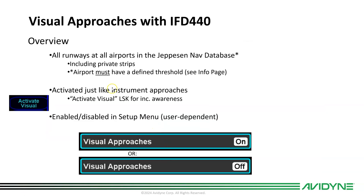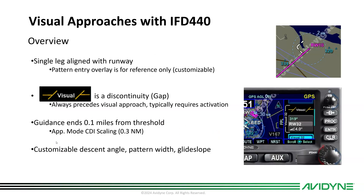You activate a visual approach just like you would an instrument approach — there's a line select key that says 'Activate Visual.' One important thing: make sure visual approaches are enabled in setup mode, otherwise you will not get offered visual approaches as a choice in the pull-down menu at the airport. I'll take you through that.